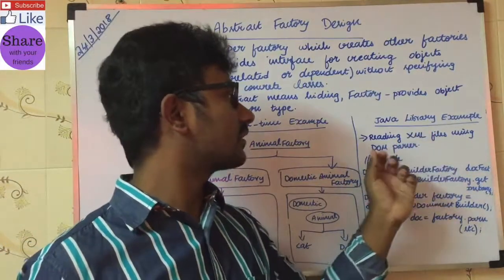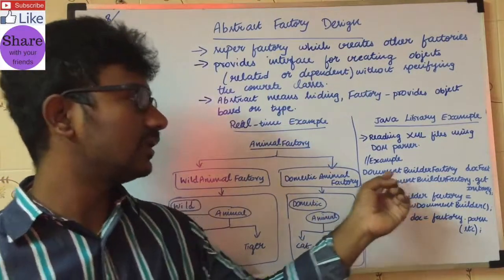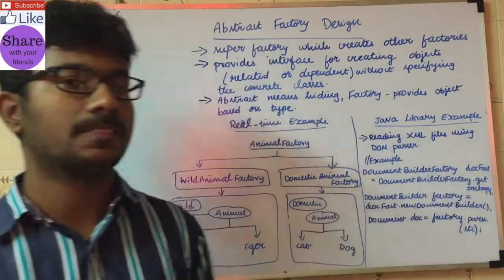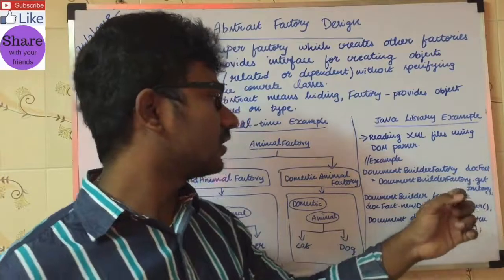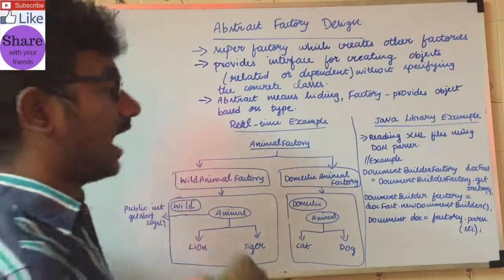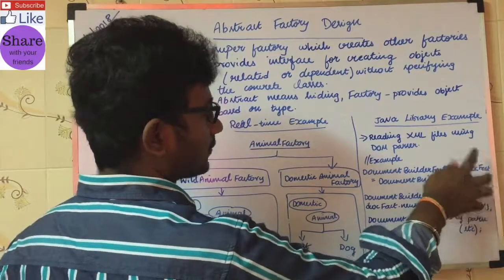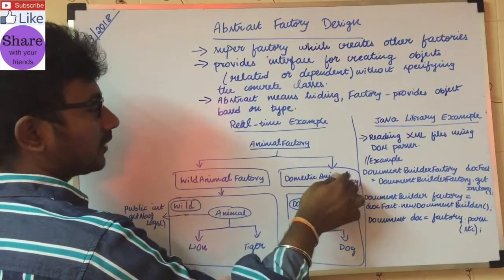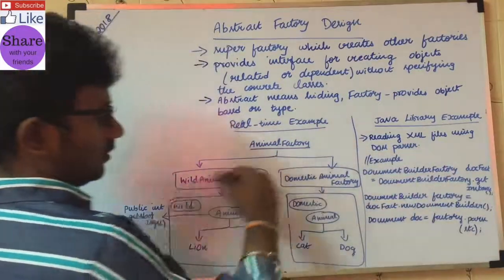A real-time example is reading XML files using a DOM parser. We will look at XML files using the DOM parser and the class objects involved. DocumentBuilderFactory.getInstance() is an actual abstract factory. This abstract factory is used to get a factory object — it is an actual factory object. For example, DocumentBuilderFactory's docFactory is an abstract object. This is like the Animal Factory returning a Wild Animal Factory or Domestic Animal Factory object — it decides by itself.